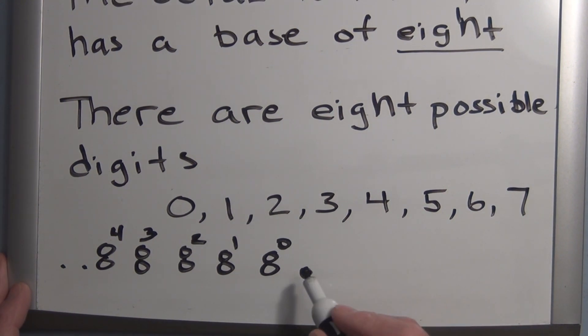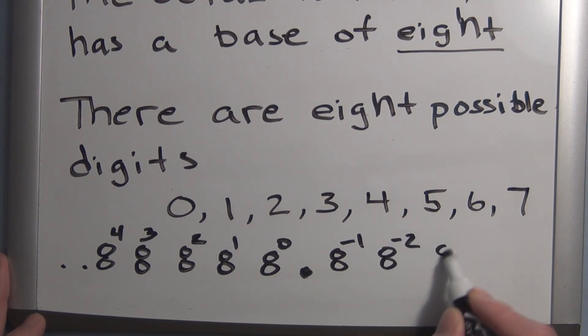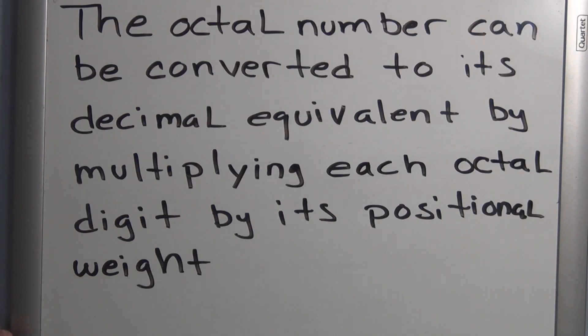Going to the right of the octal point, this will be weighted eight to the minus one, the next position over eight to the minus two and then eight to the minus three and so on. So with that information, the octal number can be converted to its decimal equivalent simply by multiplying each octal digit by its positional weight.